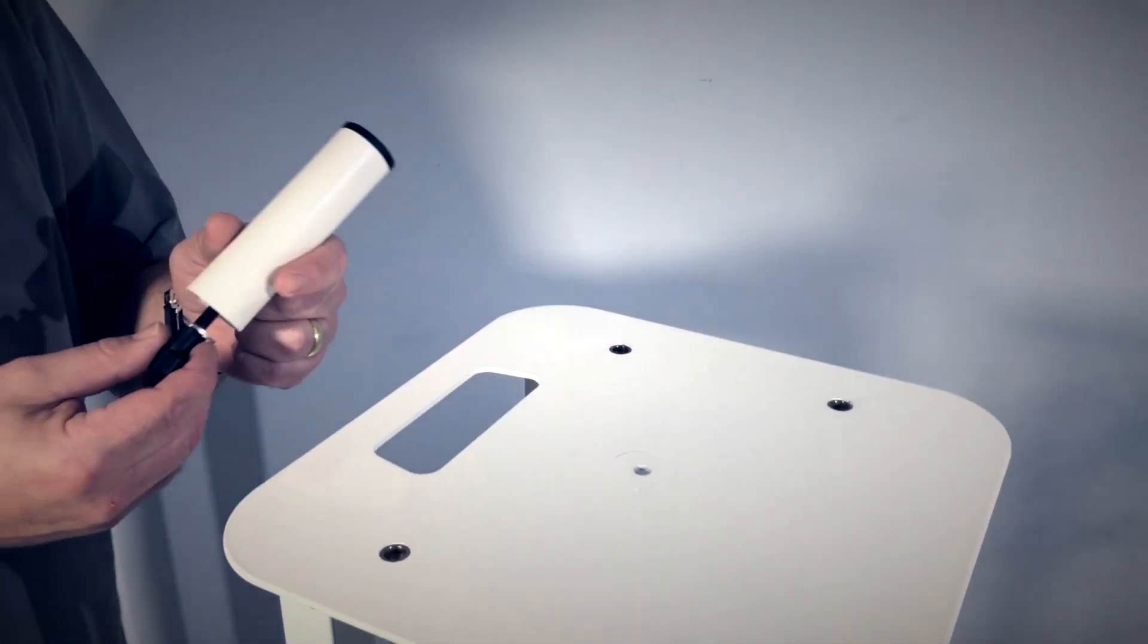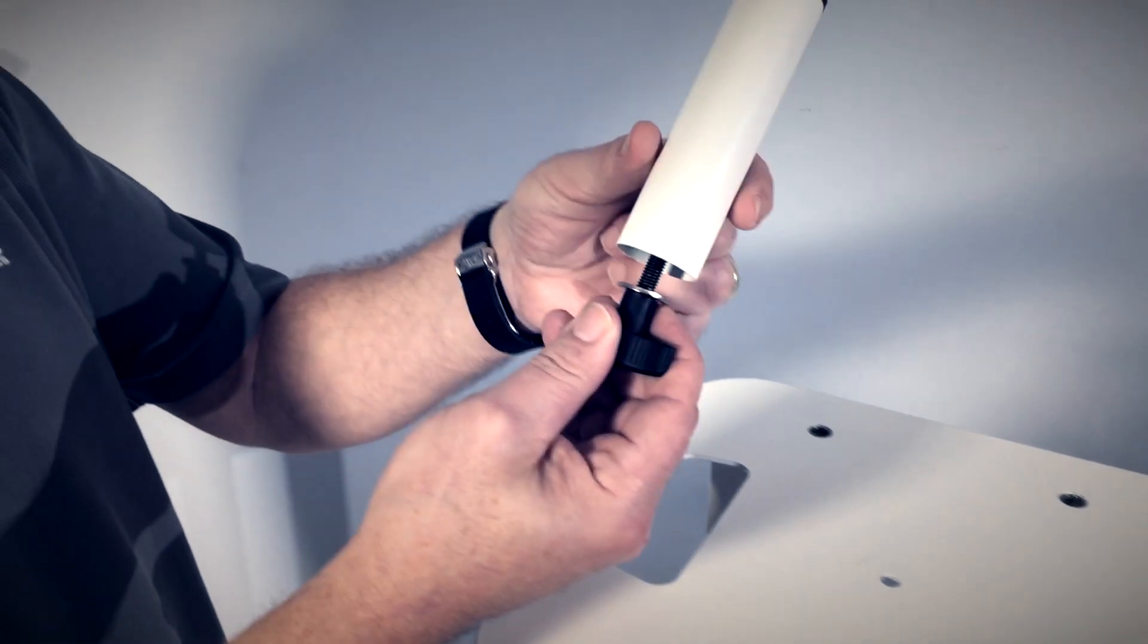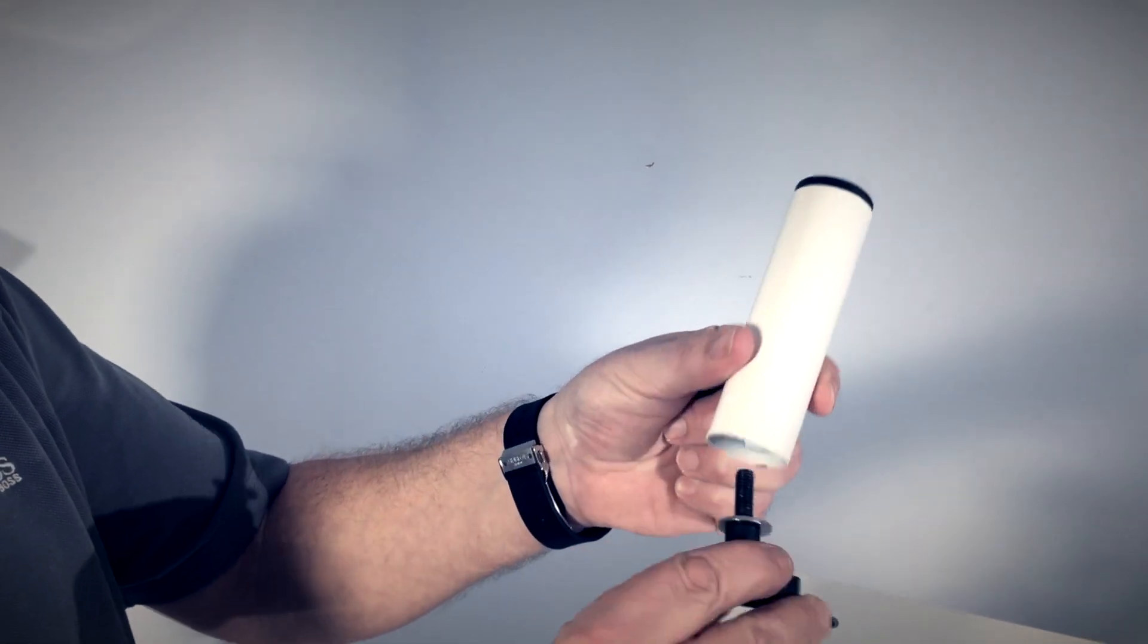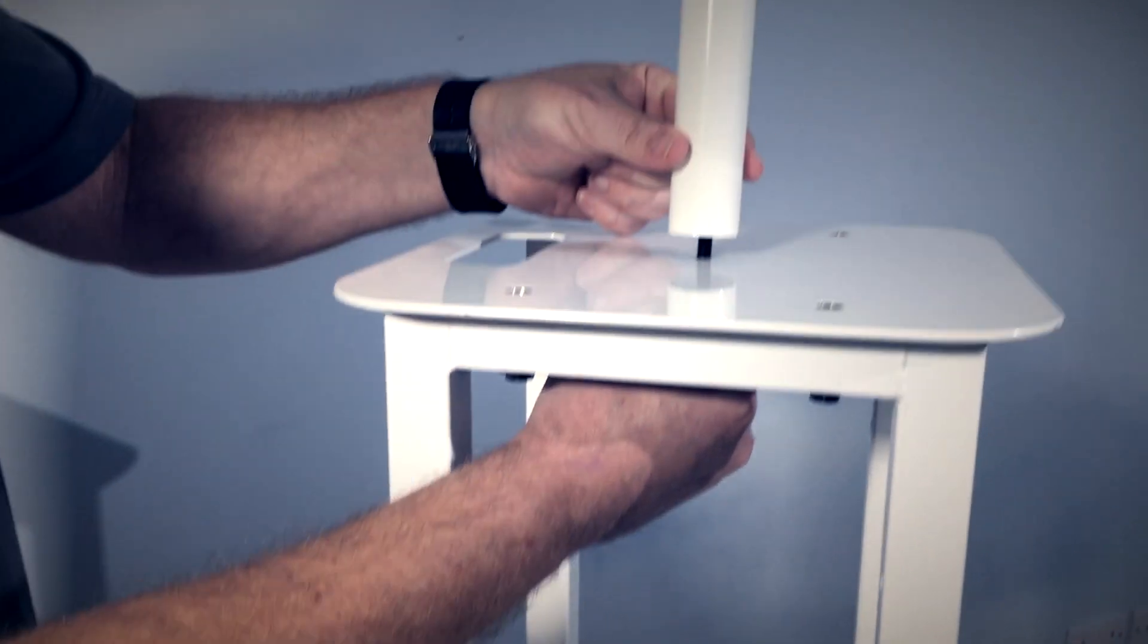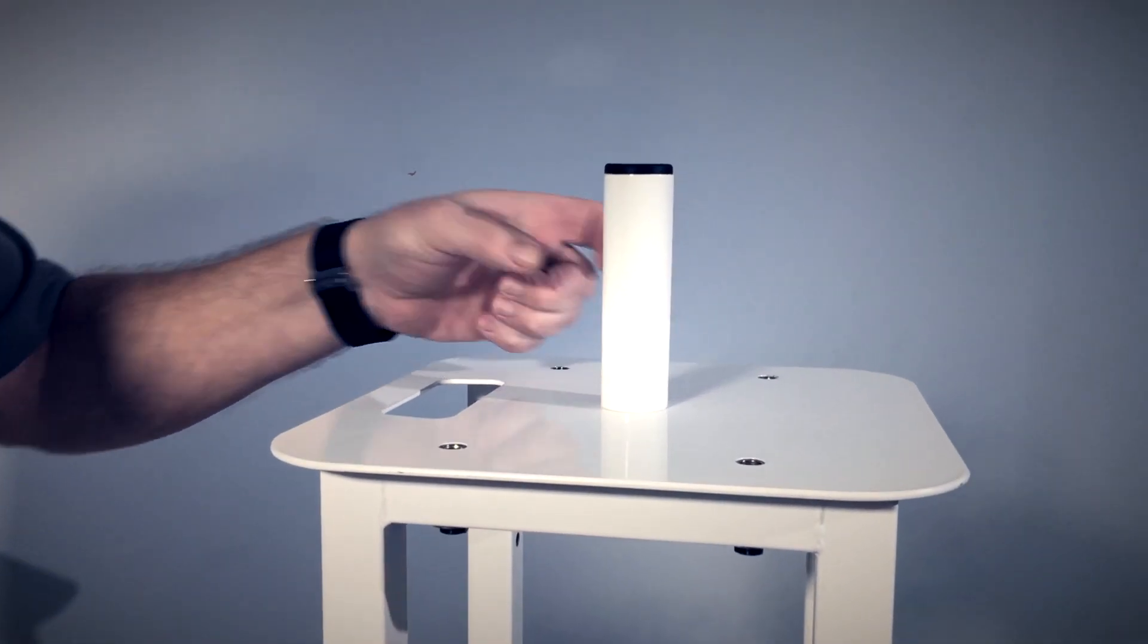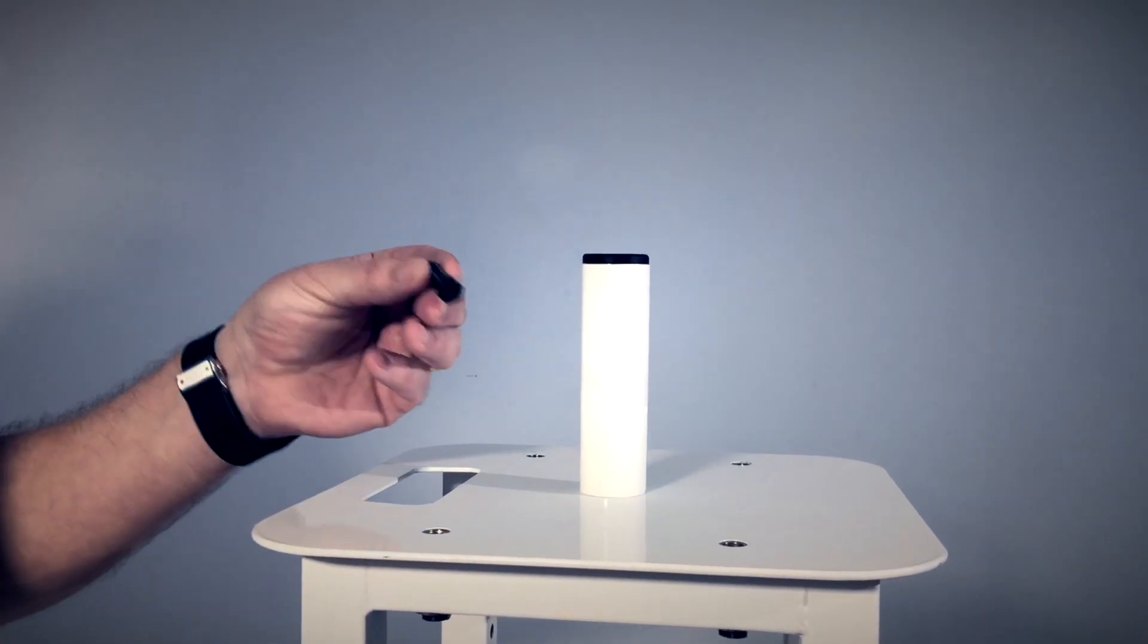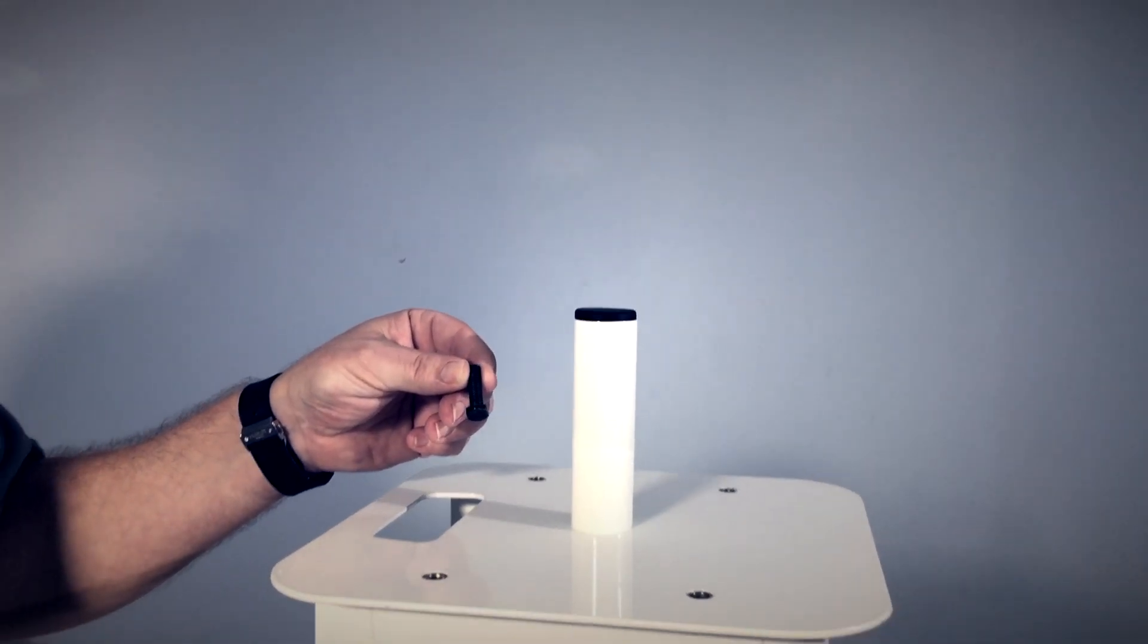We also supply a 35mm pole mount top hat adapter for placing larger speakers onto the PS1 XL. You place the adapter over the hole in the top plate and use either the thumb bolt or the standard M8 bolt to fix into position.